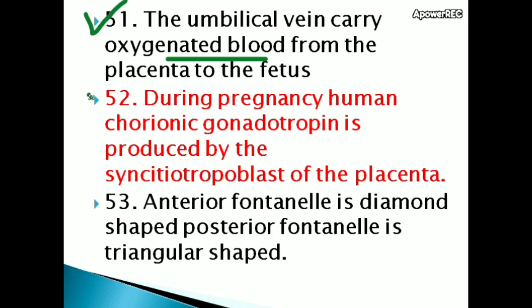During pregnancy, human chorionic gonadotropin (HCG) is produced by the syncytiotrophoblast of the placenta.